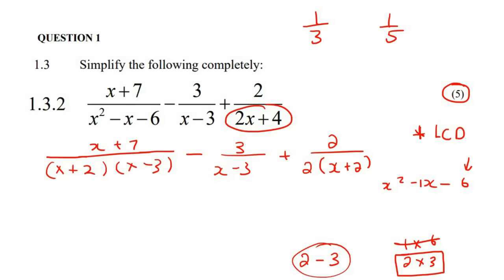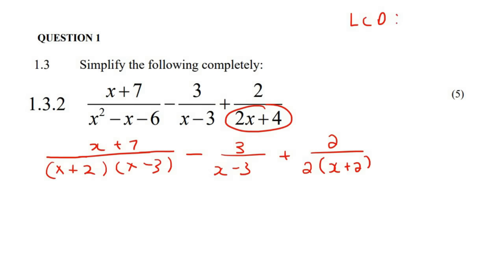Now, to find your lowest common denominator, all you do is you just take all the different parts. So there's an x plus 2. We've got one of those. So that takes care of that and that. There's an x minus 3. That takes care of that and that. And then there's this random 2, which I'll just put in the front, and that takes care of that. Okay, so we've taken care of everything.